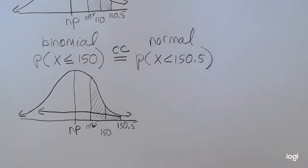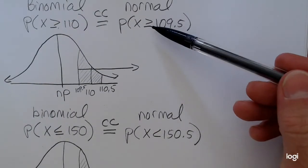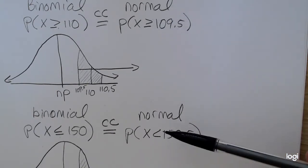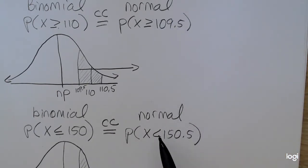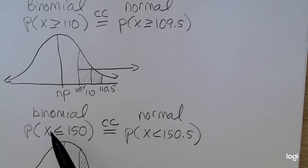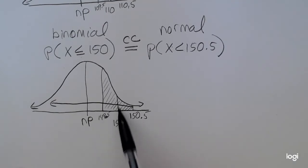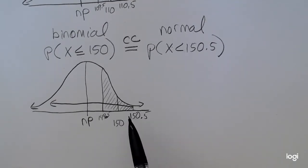I realize I'm being a little sloppy — I have the case of equality here for the normal case but didn't write it in the previous one. I could have easily included it. Once you convert over to a continuous distribution, whether or not you include the value doesn't matter. But when we make this leap from a discrete to a continuous distribution, we do have to account for how the number is represented.